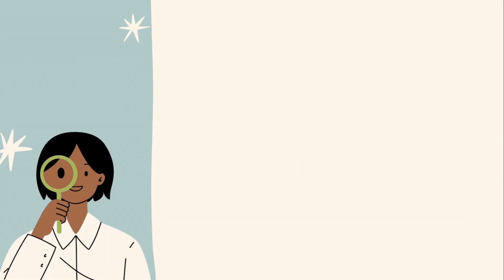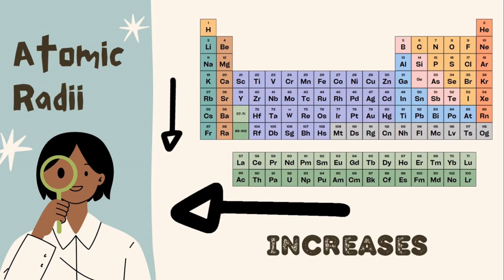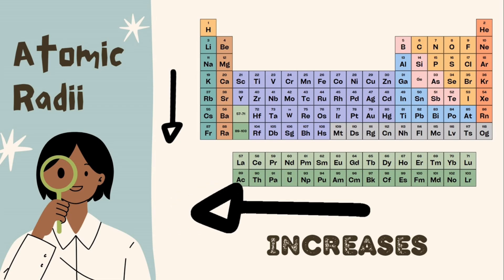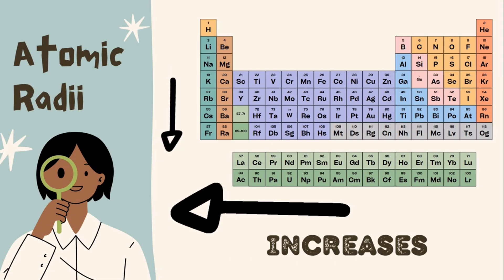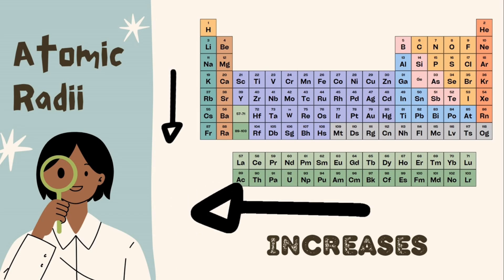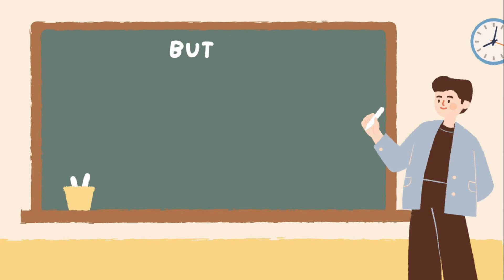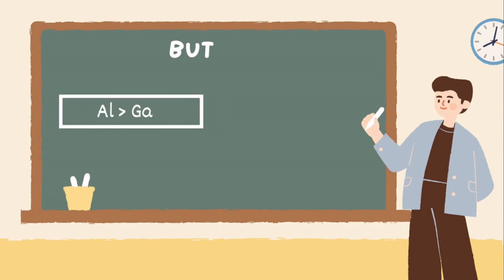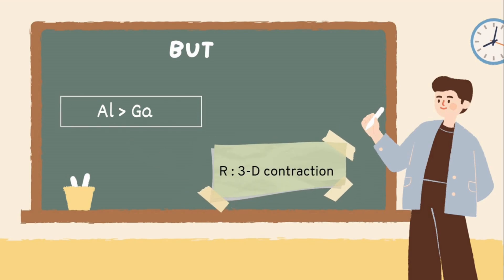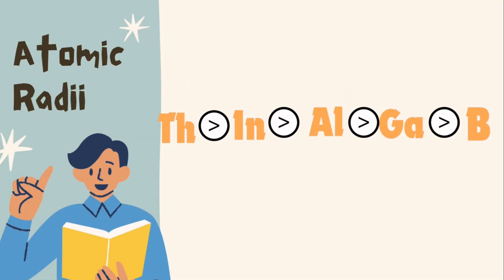The next property is atomic radii. Here also we follow the periodic table trend. According to the general periodic table trend, for Group 13 the atomic radii should go on increasing as we move down the group. But there is a little twist: aluminium has a greater radius than gallium, and the possible reason for that is the 3d contraction. So the new sequence has aluminium and gallium exchanged compared to the usual trend.